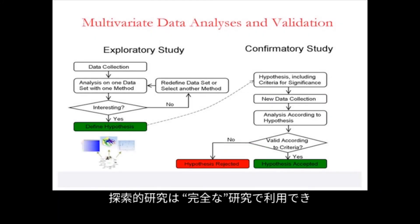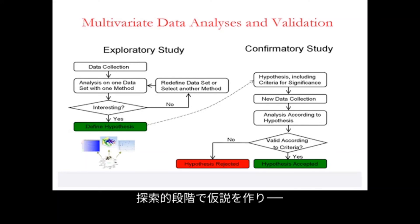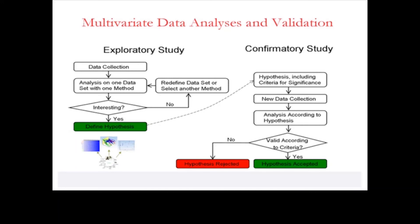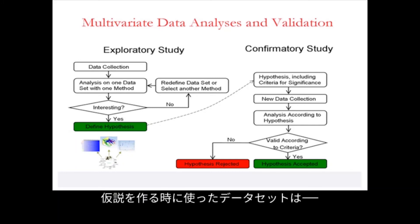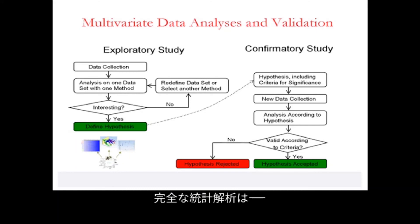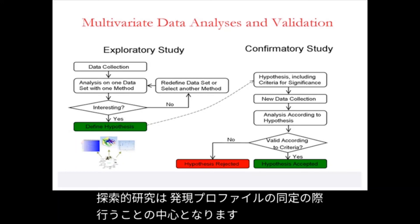A complete study combines an exploratory study with a confirmatory study, where we generate hypotheses in the exploratory phase and then validate them in the confirmatory phase. Remember that a new dataset needs to be collected for the confirmatory study, because a confirmatory study on the same dataset used to generate hypotheses will of course confirm the hypothesis. So a complete statistical analysis is composed of an exploratory and a confirmatory phase.